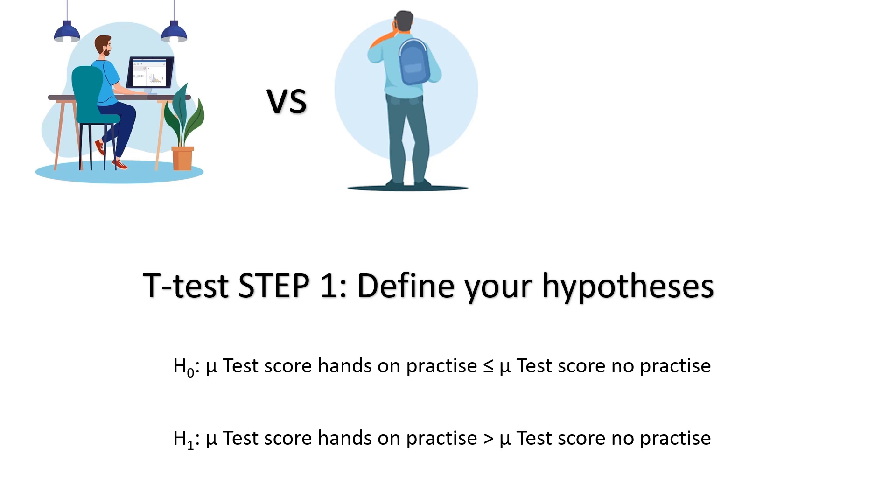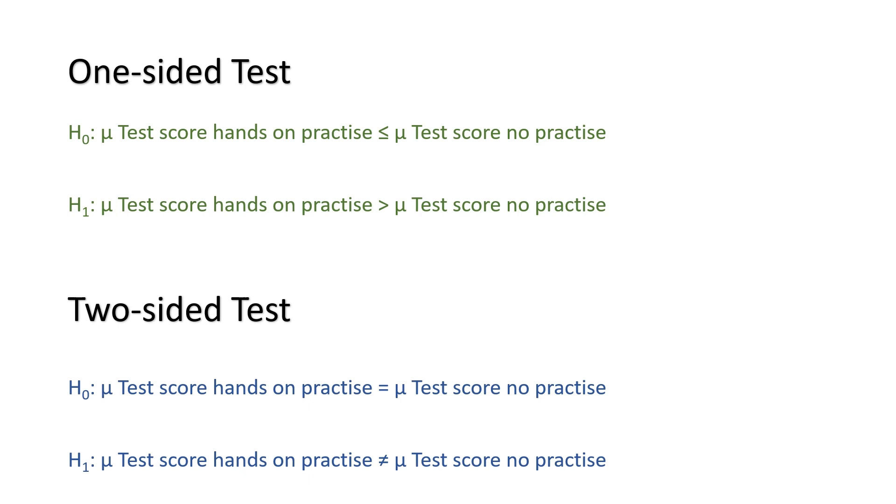This hypothesis has an assumption. I am assuming that hands-on practice has a positive impact. Therefore, I need to do a one-sided test. If my hypothesis were simply looking for a difference between the two groups, we would see it written as such. No direction is assumed and therefore, I would need to do a two-sided test. A two-sided test tells us if there is a difference. A one-sided test tells us if we should expect a specific outcome.